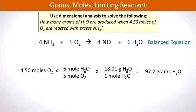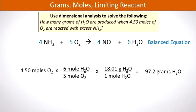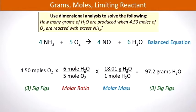Showing the balanced equation again, we set up a dimensional analysis in which 4.50 moles of oxygen are used. We place moles of oxygen in the denominator and relate them to moles of water from the balanced equation: 6 moles of water and 5 moles of oxygen. Next we set up another conversion factor to convert moles of water to grams of water using the molar mass of 18.01 grams per mole. We calculate through and obtain 94.2 grams of water — 3 sig figs — which is the value we report.